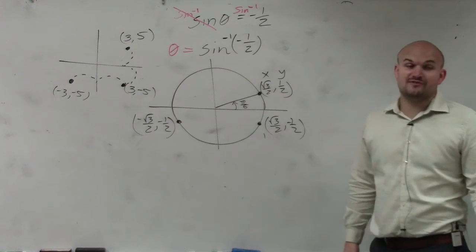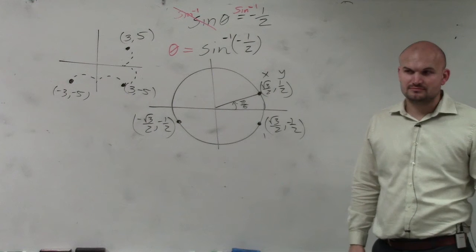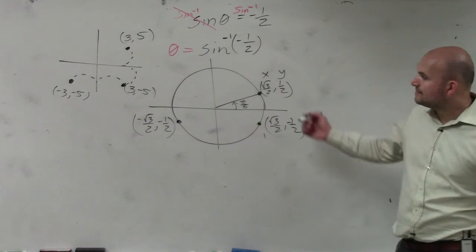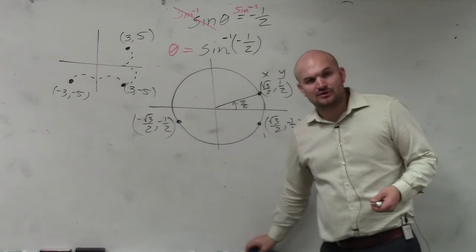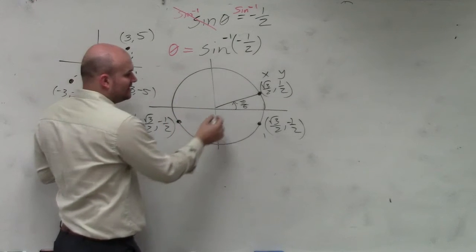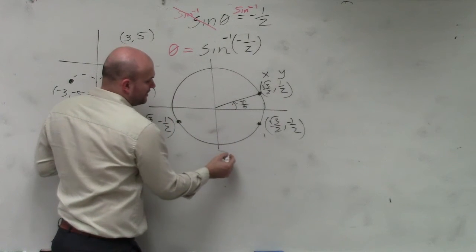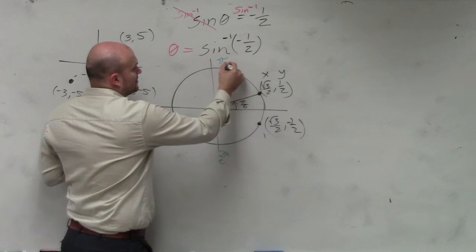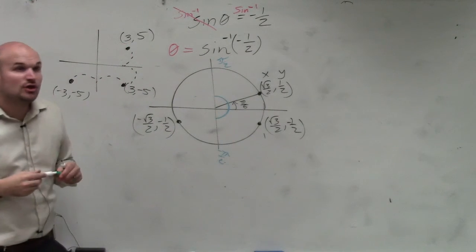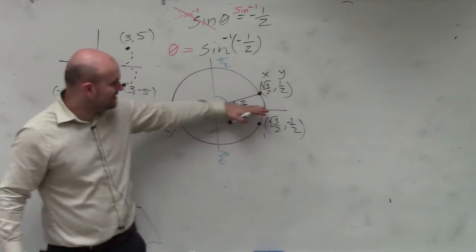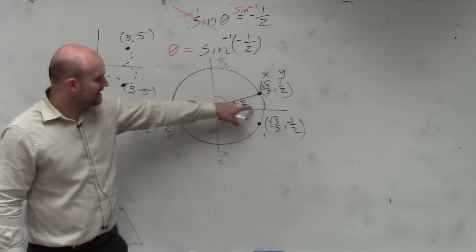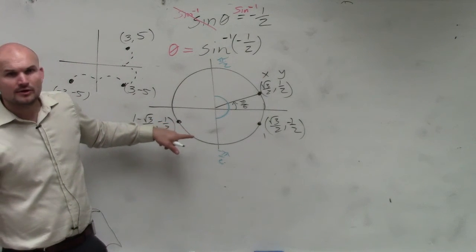Now, first of all, before I even do that, we have an issue. This problem, remember our angle, our angle has a, what is our restriction of our domain? It can only be between negative pi halves and pi halves. It can only be between there. So if here's my initial side, without even trying to figure out what this angle is, can I even rotate over to there while staying within my domain? No.